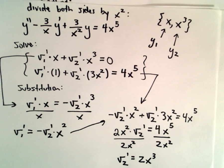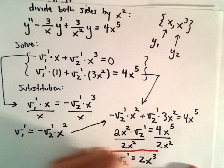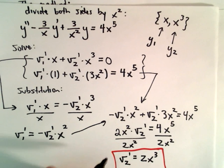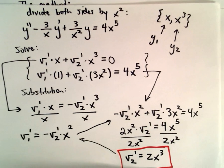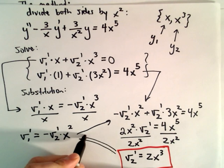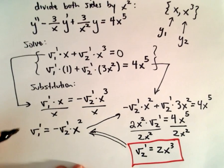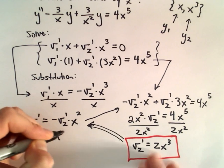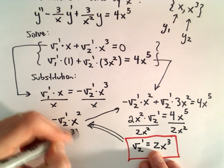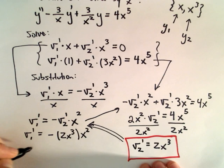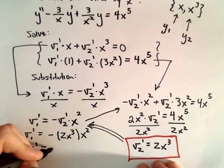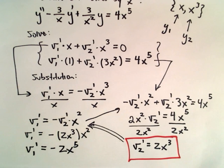So that's already part of what we need. Now that we have v₂', we can go back and solve for v₁'. Substituting back in, v₁' = −v₂'·x² = −(2x³)·x² = −2x⁵.